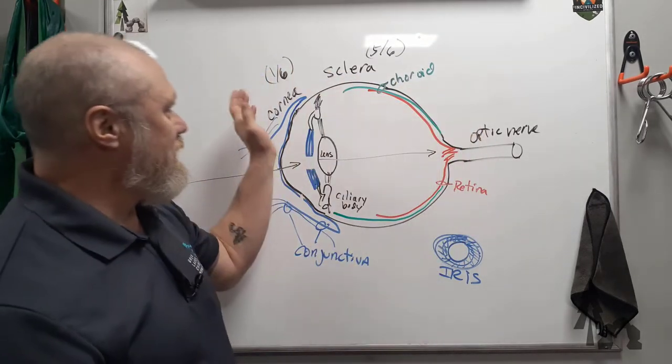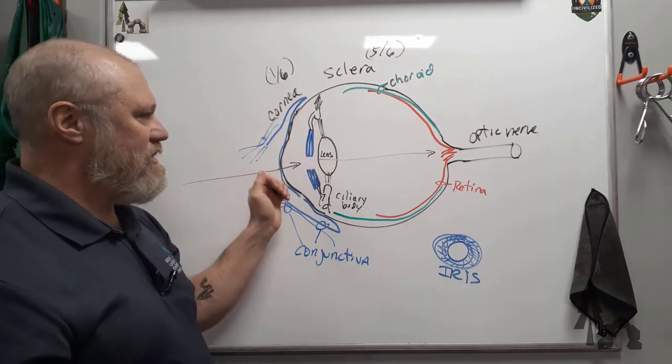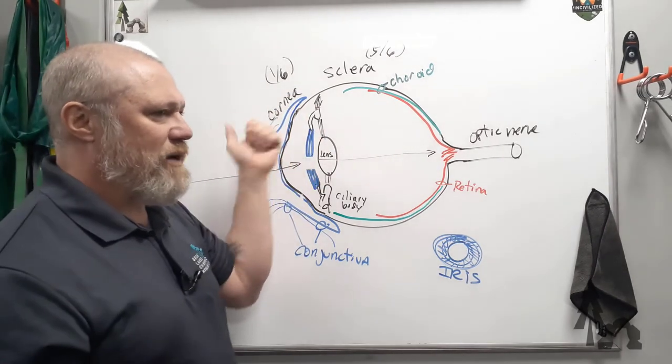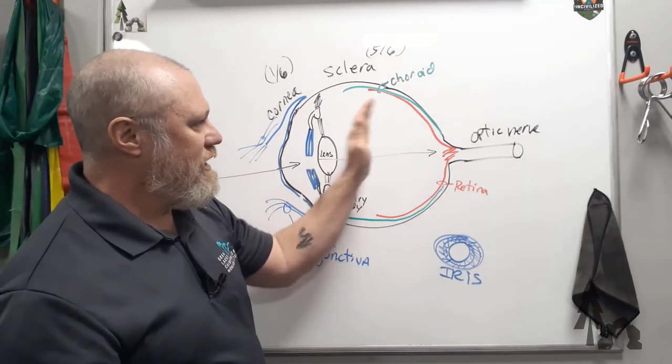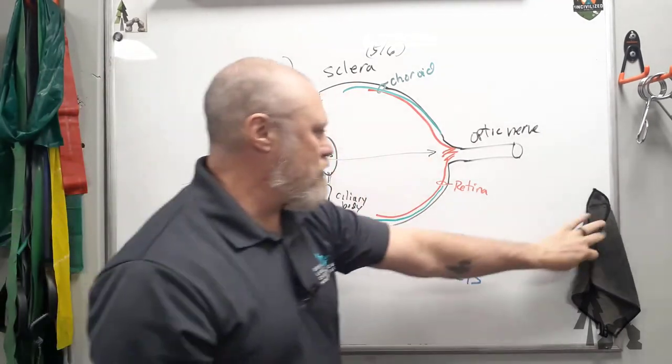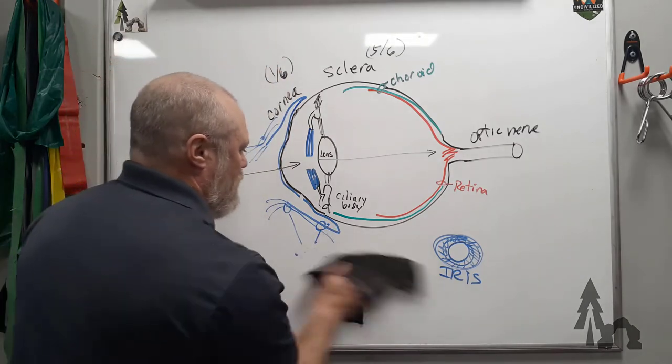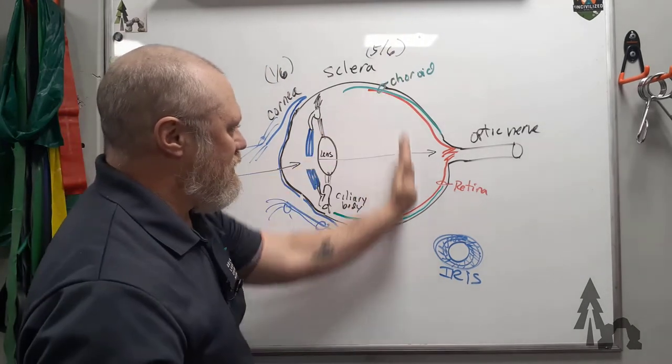Alright, so, three layers: the sclera, the anterior one-sixth of the sclera is transparent, that's the cornea, and the choroid, and then the retina at the back. I'm going to draw the plane through here.